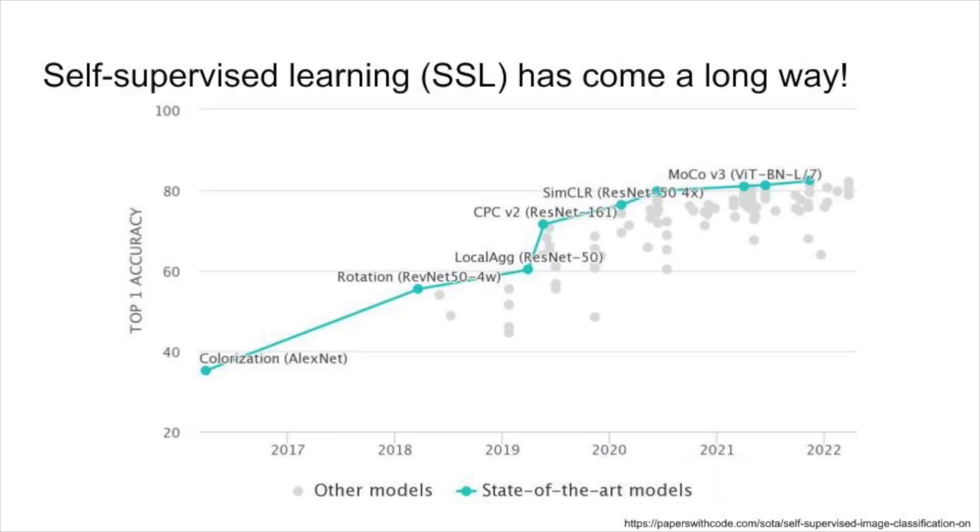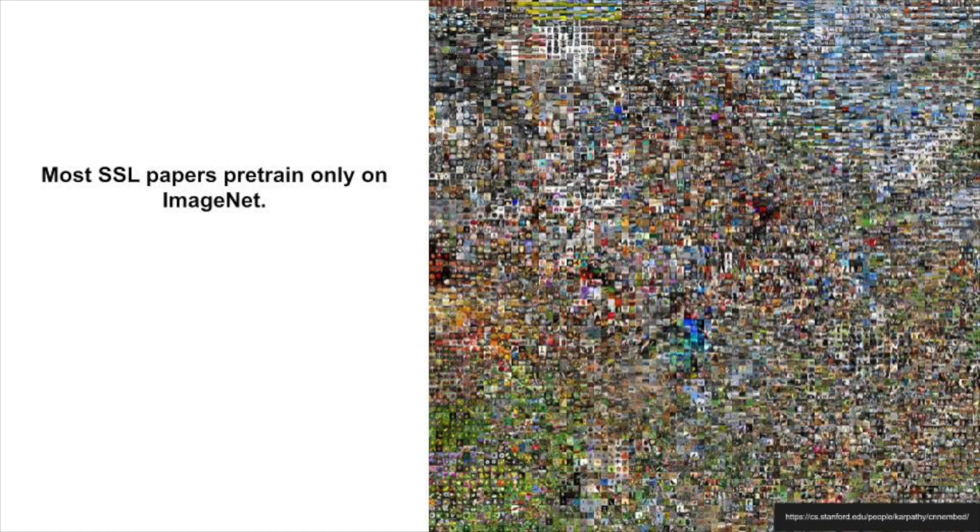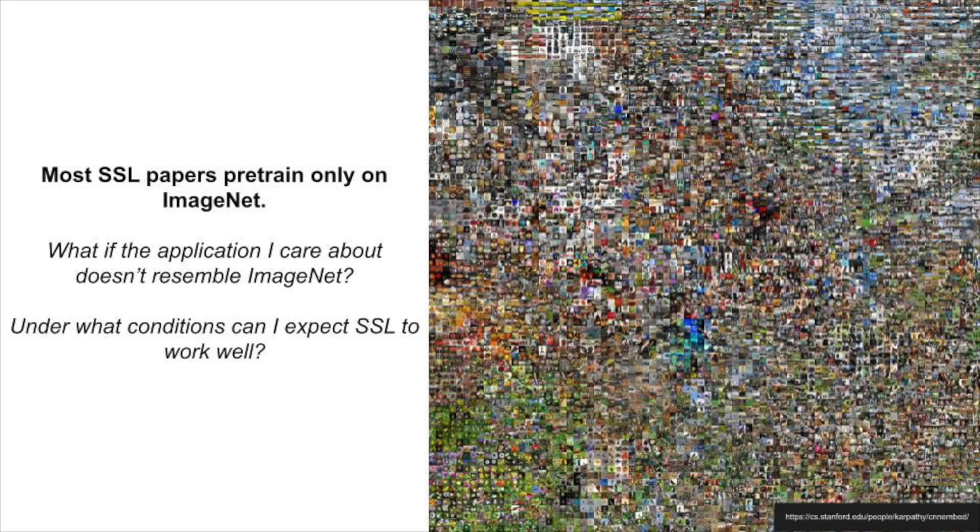Self-supervised learning has come a long way. Recent work has shown that it is possible for self-supervision to produce representations competitive with those learned from full supervision. However, most self-supervised learning papers pre-train only on ImageNet. What if the application I care about does not resemble ImageNet? Under what conditions can I expect self-supervised learning to work well?